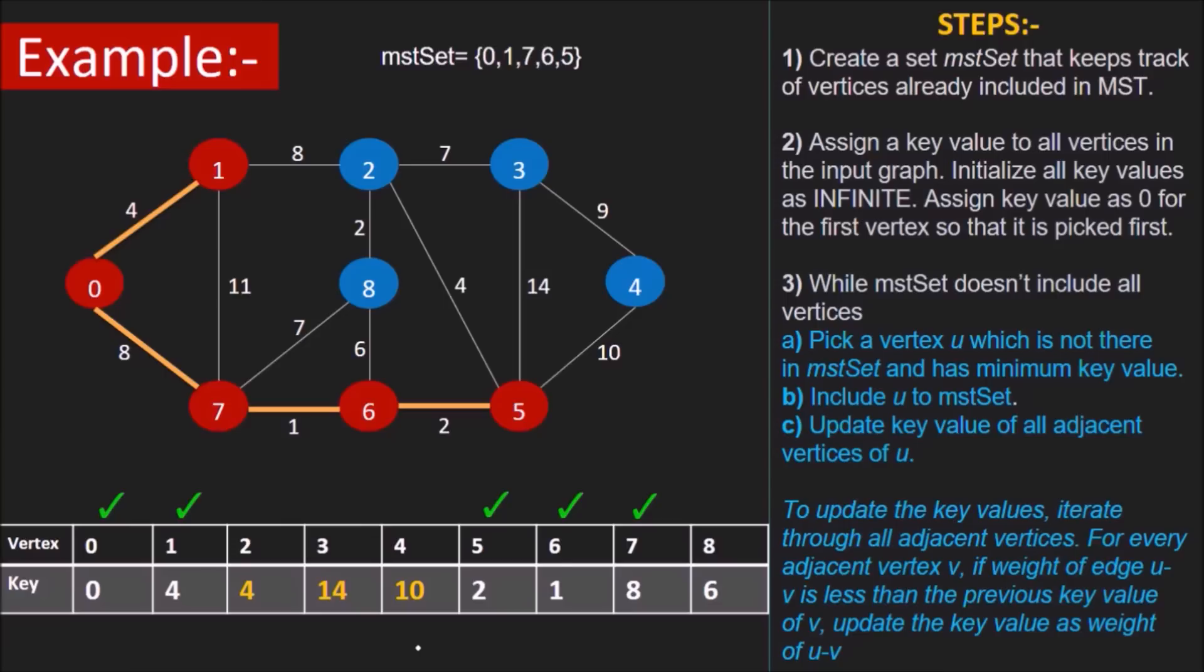Among the four vertices not in MST set, v2 has the lowest key. With v2 as u, we find its neighboring vertices not in MST set v3 and v8 and update their keys following the same rule as always.